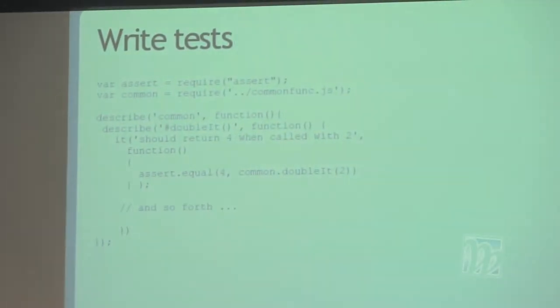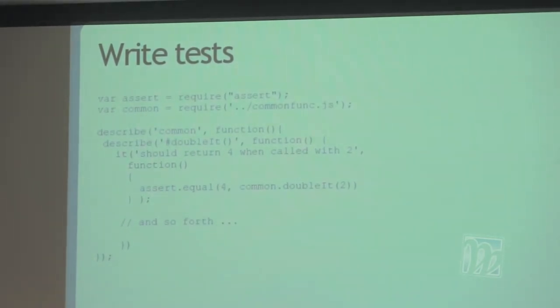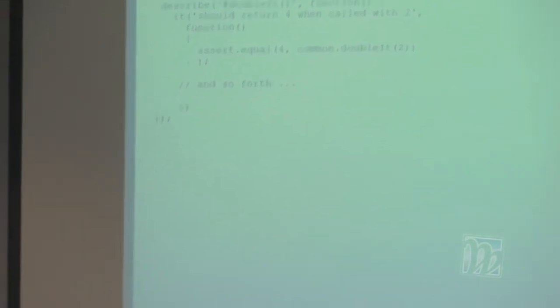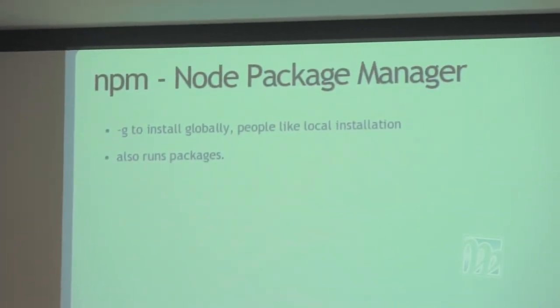Here's how you write tests for Mocha. Basically you tag things onto existing classes, tag tests on, and set up asserts. In this case we're saying: if we call doubleIt with two, we expect four. In the process of developing this I also set it up to ask 'what happens if you call it with a string of four?' — and discovered that in fact that doesn't work as nicely in JavaScript as it does in Perl.